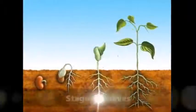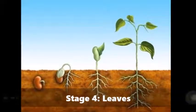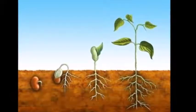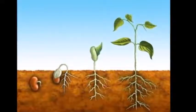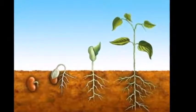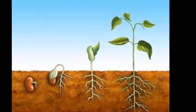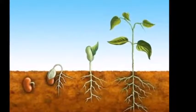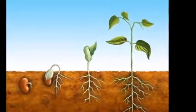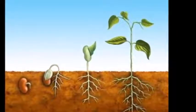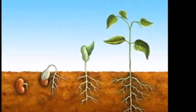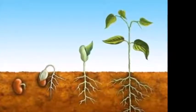The fourth stage of the plant life cycle is the leaves. The leaves are very important, not only because they are the organs of the plant, but it is also where photosynthesis occurs. Photosynthesis is when the plant uses the sunlight to make food by using water and carbon dioxide.